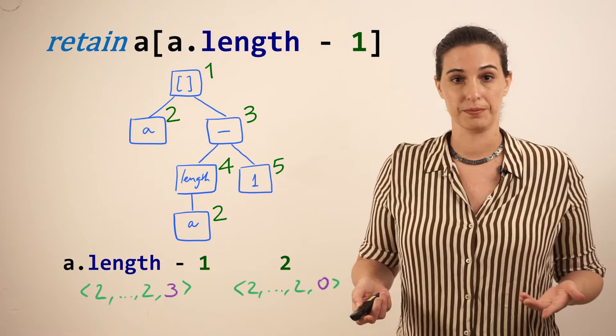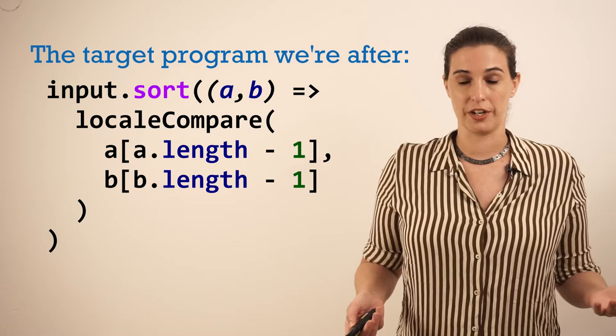And as a bonus, not only is a.length minus 1 now differentiated from 2, it's also differentiated from b.length minus 1, which would have been observationally equivalent under examples, since any string from b also comes from our input list where all the strings are of length 3, which is good because we need both of them for our target program.